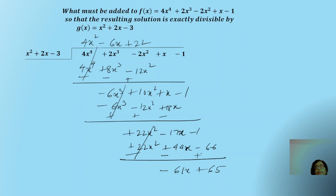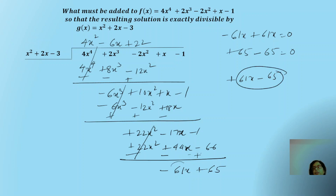The remainder is minus 61x + 65. The question asks what must be added to make the polynomial exactly divisible. To reduce minus 61x to zero, we add plus 61x. To reduce plus 65 to zero, we add minus 65. So the expression that needs to be added is 61x − 65. This is the final solution — the expression to be added to the polynomial so that it becomes exactly divisible by the given polynomial g(x).